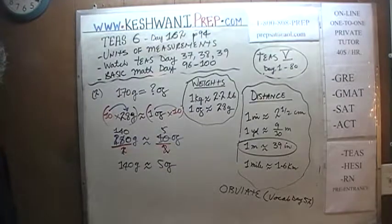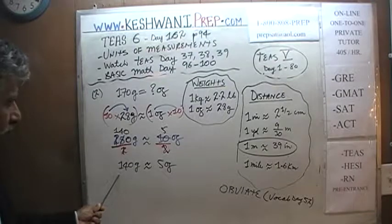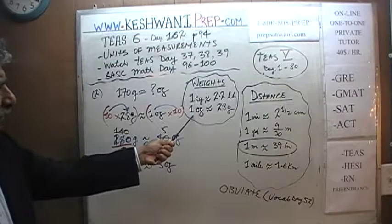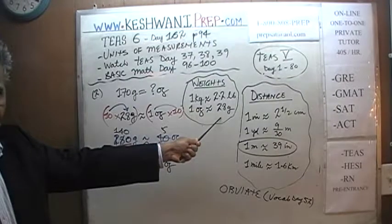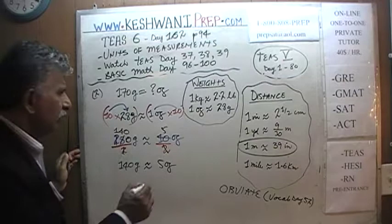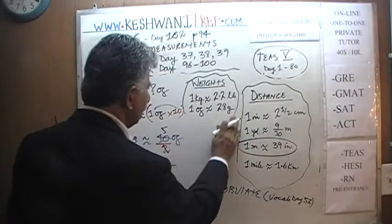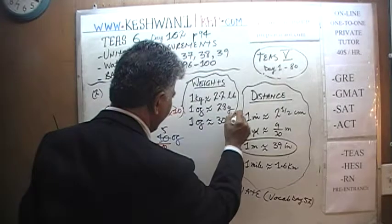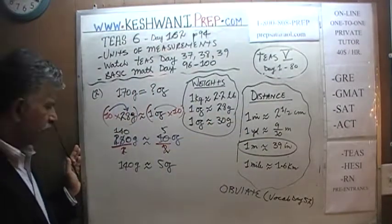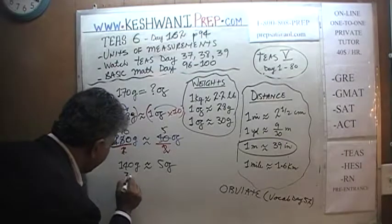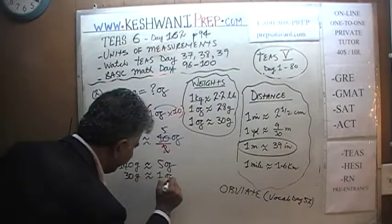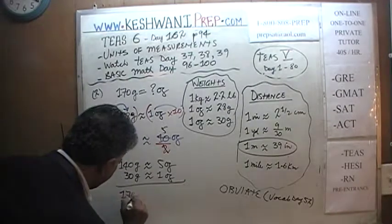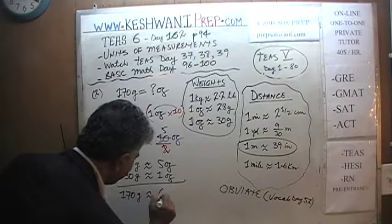We don't want 140 grams — we want 170. We know 1 ounce is 28 grams, but nobody's going to fault you for approximating 1 ounce as 30 grams. So: 140 plus 30 is 170 grams, which is approximately 5 plus 1, giving us 6 ounces. Done — that's one way of doing it.